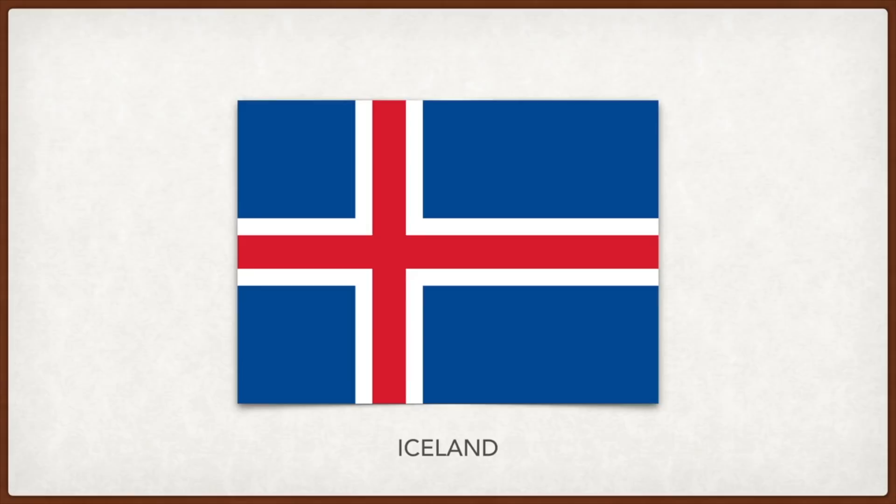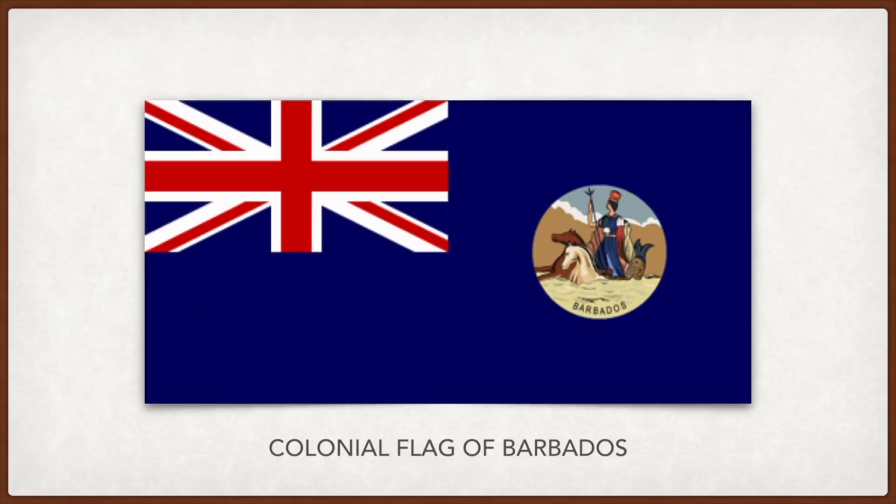Barbados: the blue, yellow, and blue stand for the sea, sand, and sky. The trident was taken from the colonial flag of Barbados under British rule, where Britannia is seen holding the trident; on the Barbados flag the trident is broken — without a staff — to signify its break from Britain.